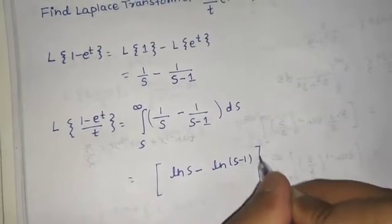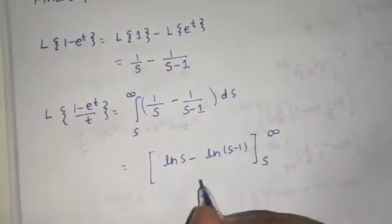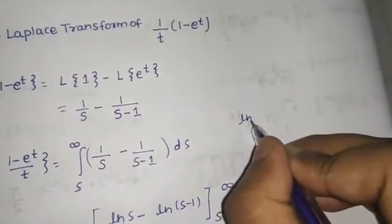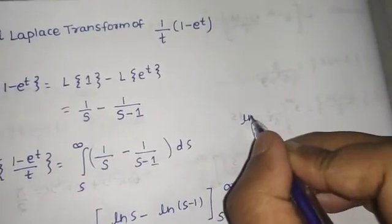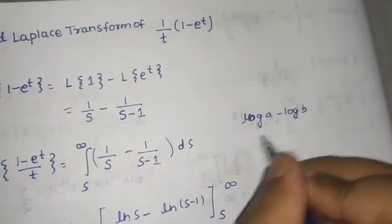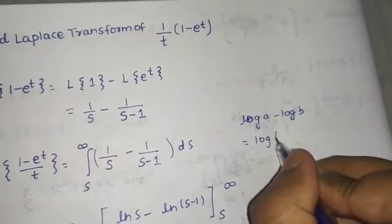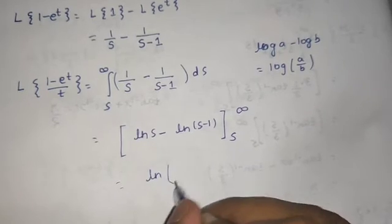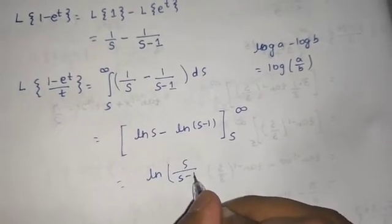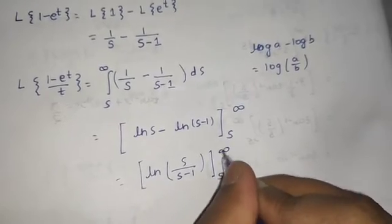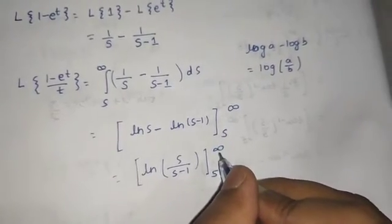The integral of 1 upon s is ln s, and for the second term we get ln of s minus 1, evaluated from s to infinity. We can apply the log property which says log a minus log b equals log a by b, so we write this as ln of s divided by s minus 1, from s to infinity.